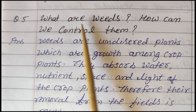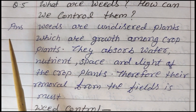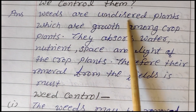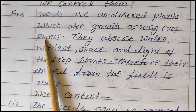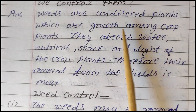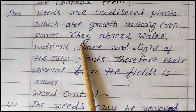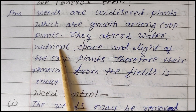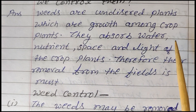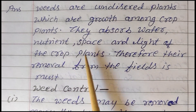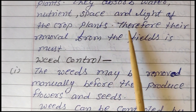Question 5: What are weeds? (Kharpatwar kya hai?) How can we control them? Weeds are undesired plants which grow among crop plants. (Kharpatwar ek prakar ke anwanchhit paudhe hote hain jo hamari faslon ke beech ug aate hain.) They absorb water, nutrients, space, and light of the crop plants, which affects our main crops.